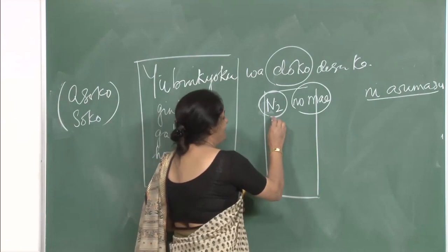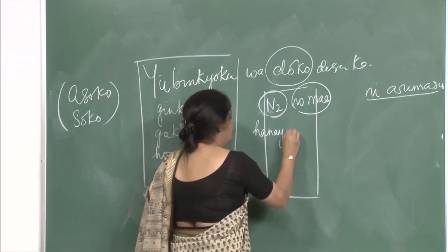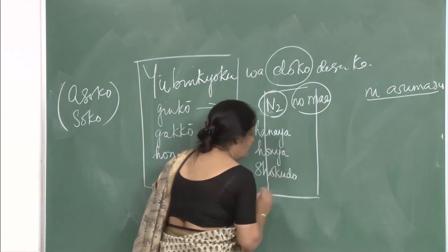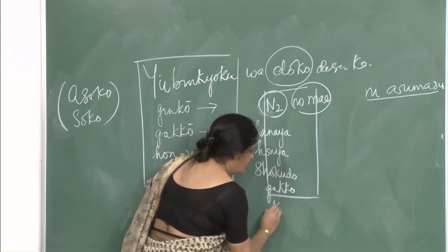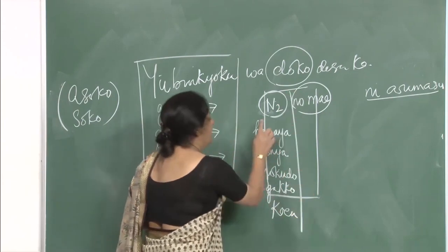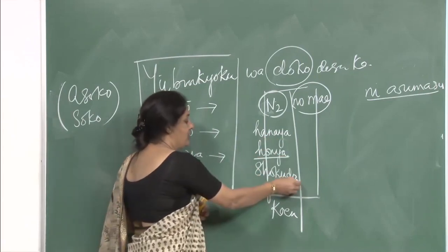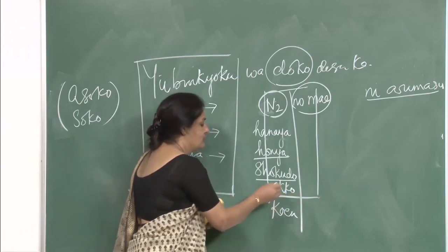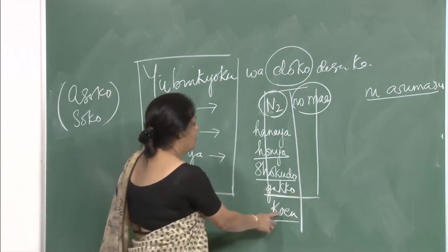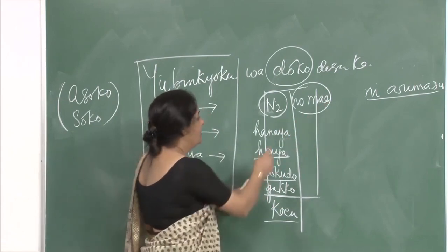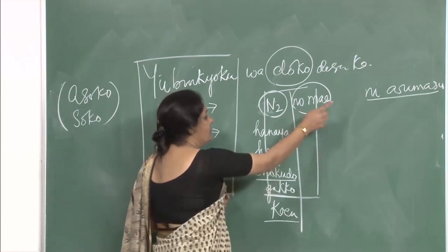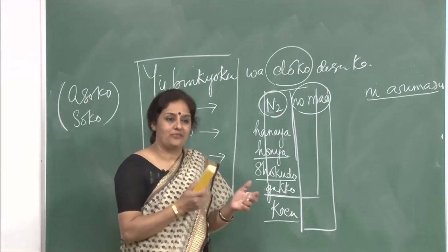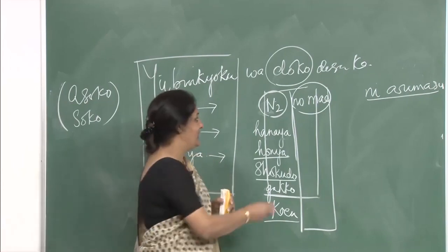Ginkou wa doko desu ka? Ginkou wa hanaya / honya / shokudo / gakkou / kouen — any of these — no mae ni arimasu. Hanaya is flower shop, honya is bookstore, shokudo is dining hall or canteen, gakkou is school, kouen is park. Ginkou wa kouen no mae ni arimasu. Ginkou wa gakkou no mae ni arimasu. Instead of just mae meaning in front, you can use other locational words — called locational nouns in Japanese.